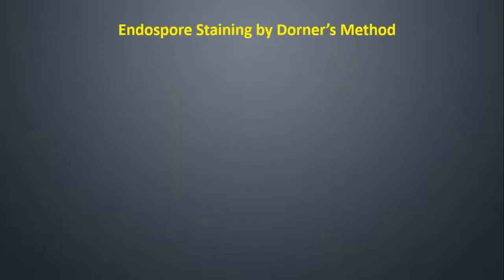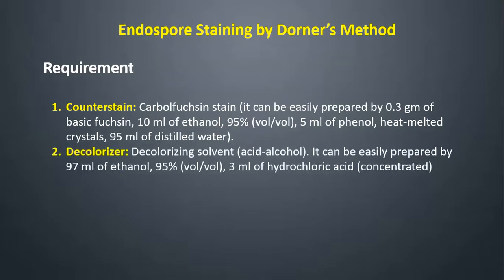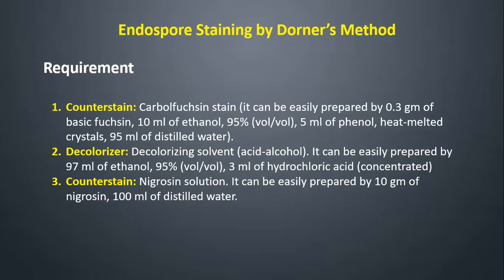The second method of endospore staining is Dorner's Method. Requirements for Dorner's Method — Primary stain: carbol fuchsin, prepared with 0.3 g of basic fuchsin, 10 mL of 95% ethanol, 5 mL of phenol (heat-melted crystals), and 95 mL of distilled water. Decolorizer: acid alcohol, prepared with 97 mL of 95% ethanol and 3 mL of concentrated hydrochloric acid. Counter stain: nigrosin solution, prepared with 10 g of nigrosin and 100 mL of distilled water.